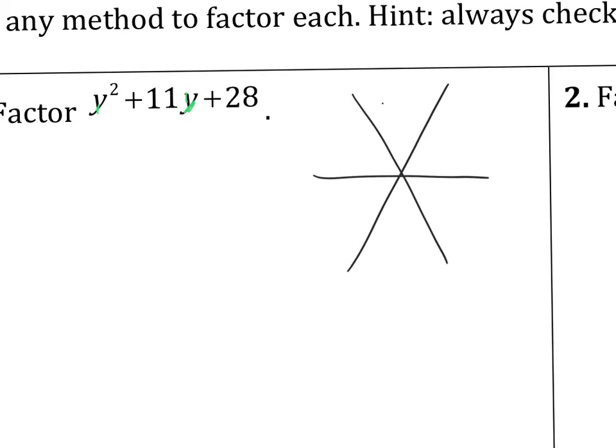So I'm going to set this up with a snowflake. Remember that a times c, so 28 goes on top, b goes on the bottom, and y's in my wings. More specifically, it's a 1y, but I don't need to write that. Now I ask myself, what two numbers multiply to 28 but add to 11?